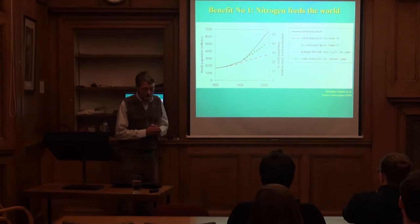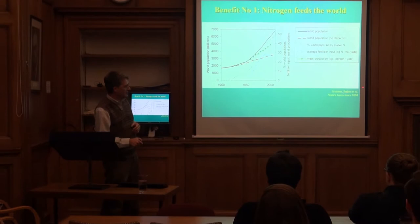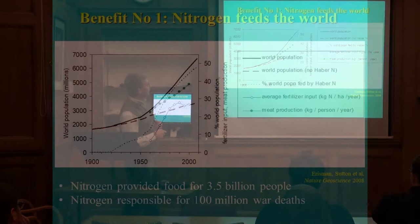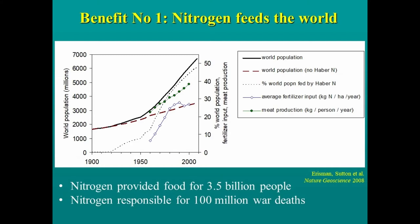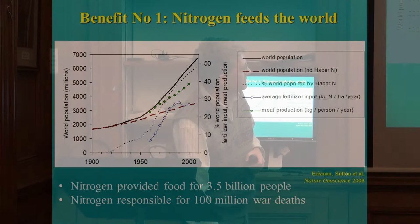We made a rather brave graph — published in Nature Geoscience — showing the world population going up. We then estimated, with some bravery, what world population might have looked like without nitrogen fertilizer. Our estimate is that about 48 percent of the world is alive today because of nitrogen fertilizers — roughly three and a half billion people owe their existence to them.